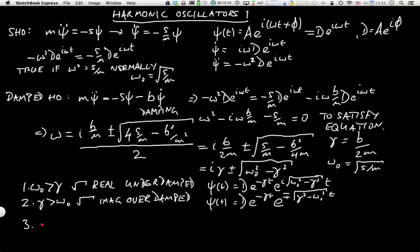The third term, the special case, is where γ equals ω₀. In this case, ω equals γ, and this is the critically damped system. You would end up with a system which goes to zero as fast as is possible.